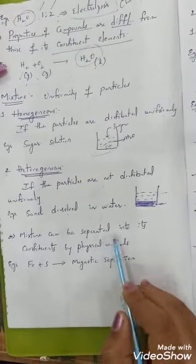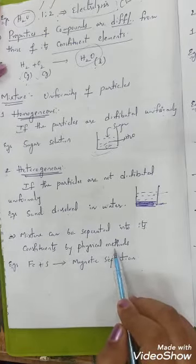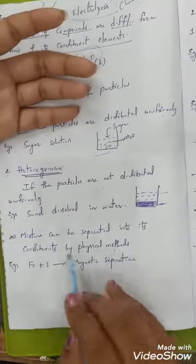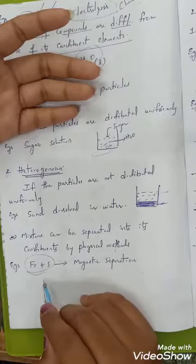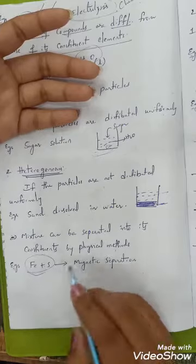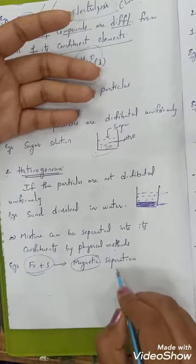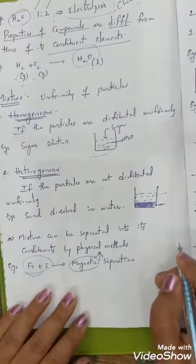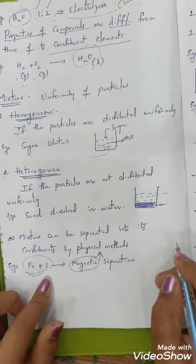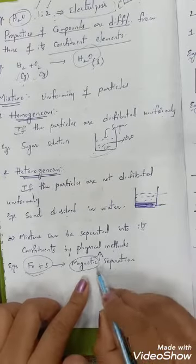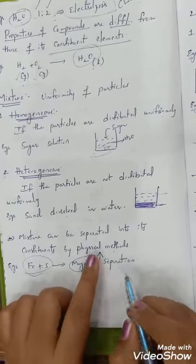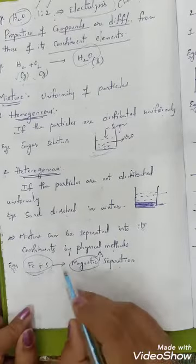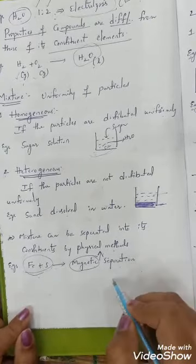Mixtures can be separated into their constituents by physical methods. For example, a mixture containing iron and sulfur can be separated using a magnet — this process is known as magnetic separation, which is an example of a physical method. Mixtures can be easily separated into their constituents by means of physical methods.